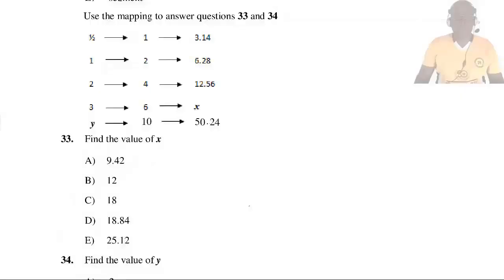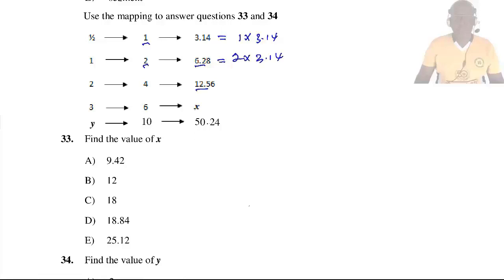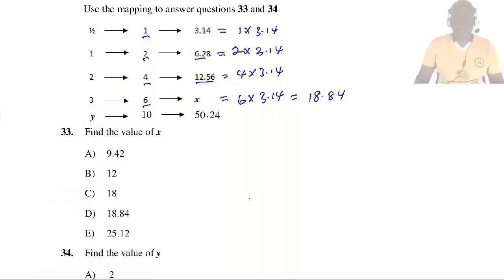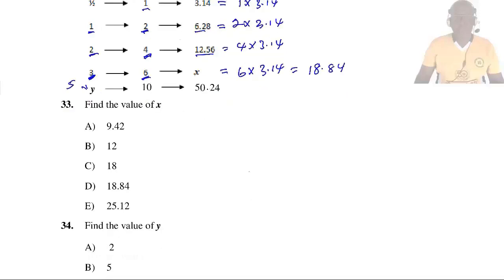Use the mapping to answer questions 33 and 34. Question 33: The value here equals 1 × 3.14; the next equals 2 × 3.14. So the value for 6 equals 6 × 3.14 = 18.84. So the answer is D. Question 34: Find the value of Y. The pattern shows each output is half the input — half of 2 is 1, half of 4 is 2, half of 6 is 3 — so Y = half of 10 = 5. So the answer is B.